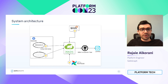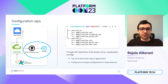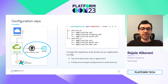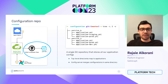We currently store all of our configurations in a single configuration repository on GitHub. Each application gets its own directory that has one or more configuration files. Each service has a base config file and two environment-specific config files. When a client requests a configuration for a specific application in a specific environment, the config server merges the base file with the environment-specific file before returning the result to the client. This feature makes it really easy to share parameters across different environments and set a common base configuration for your application.